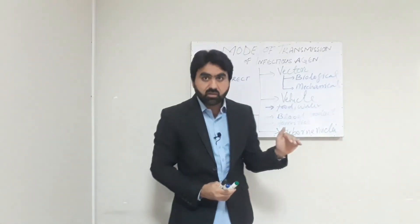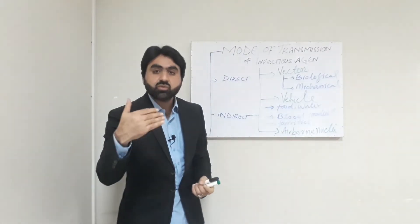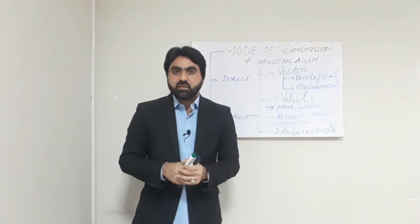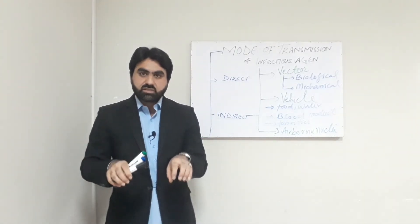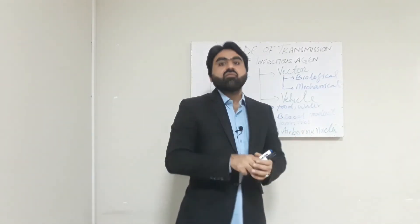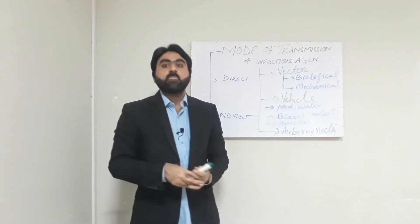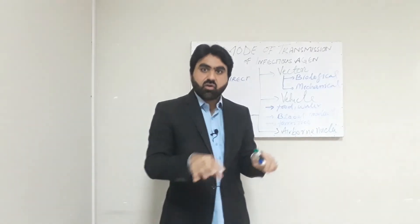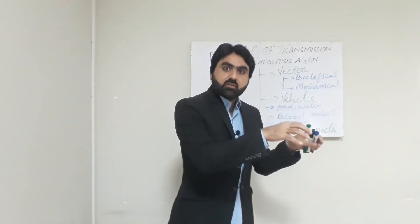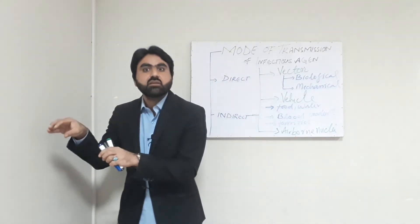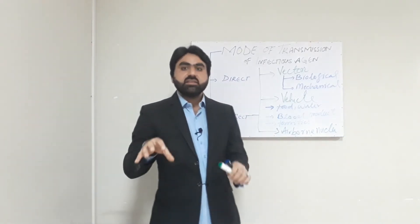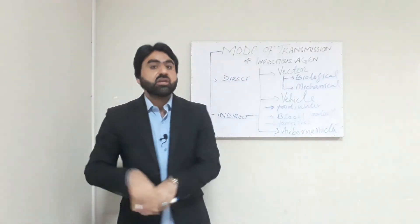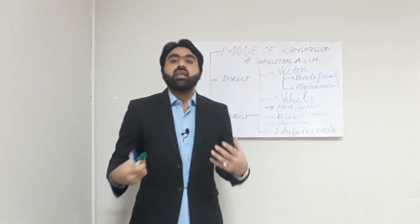In mechanical transmission, the vector does not provide any space for multiplication or maturation — it only transfers the infectious agent from reservoir to the susceptible host. For example, in shigellosis, the bacterium Shigella dysenteriae is carried on the legs or appendages of flies from the stool of an infected person to the susceptible host. The fly acts only as a mechanical carrier. This type of transmission is known as mechanical transmission through a vector.